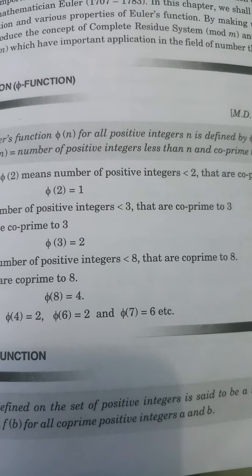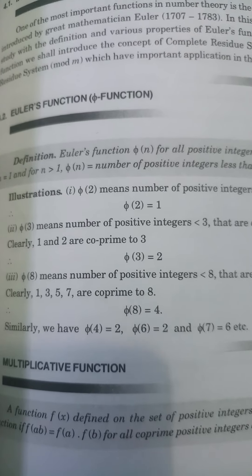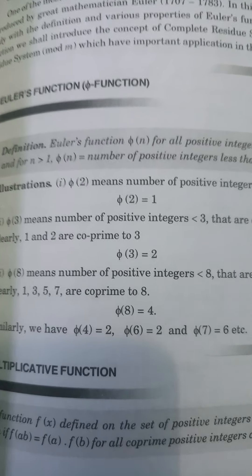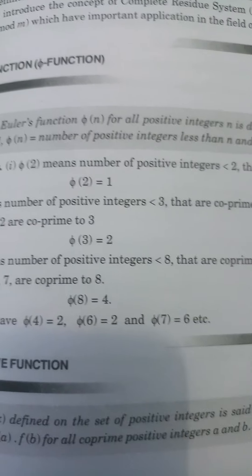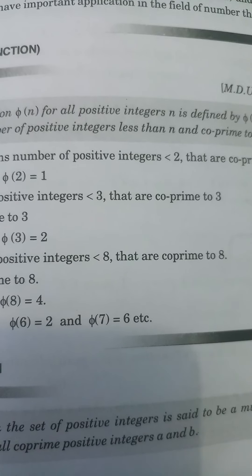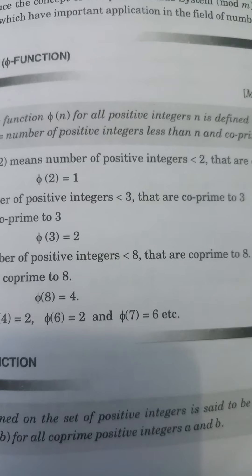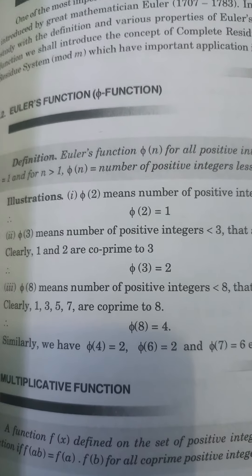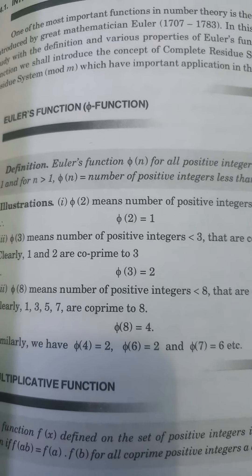So, Euler's function phi(n) equals 2. phi(3) means the number of positive integers less than 3 and co-prime to 3 — these are 1 and 2 — so phi(3) equals 2.